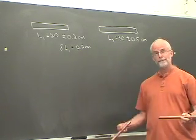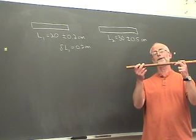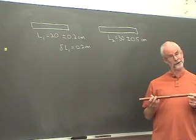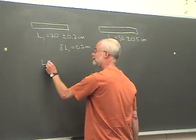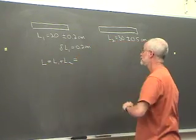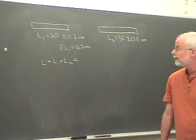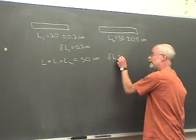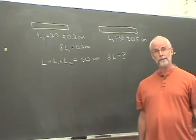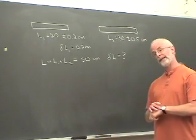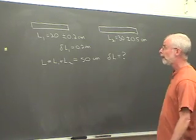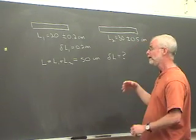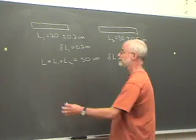Now I'm going to take my two bars and connect them together — glue them with a glue that's infinitesimally thin. I want to determine the length of the composite bar and its uncertainty. The length of the composite bar L is simply L1 plus L2, and with my best estimates of L1 and L2, L is going to be 50 centimeters. What's more interesting is the uncertainty in L. To get to the answer, we're going to begin with a brute force numerical approach — looking at the maximum and minimum values of L1 and L2, and asking how we can combine them to form maximum and minimum values of L.